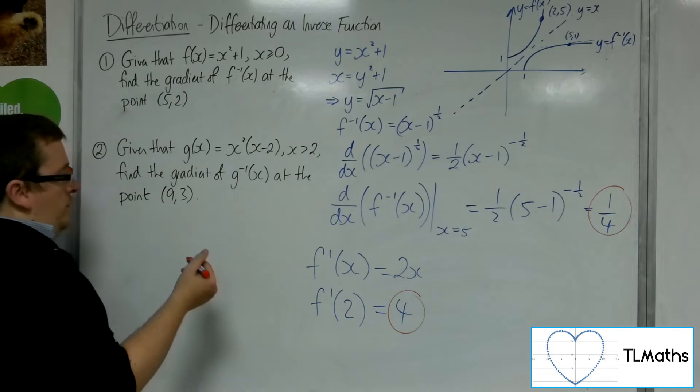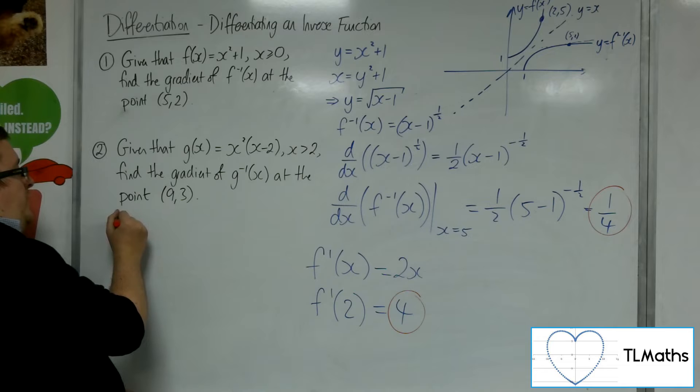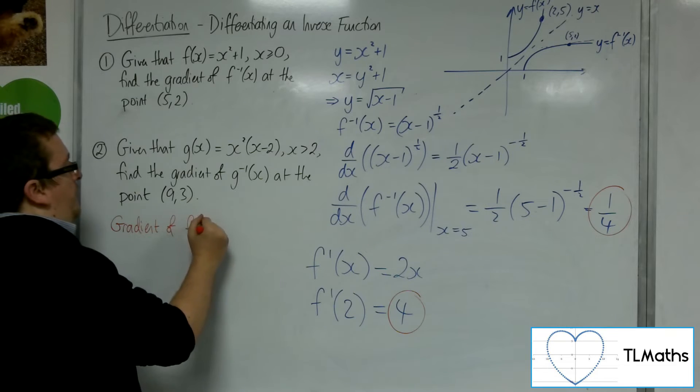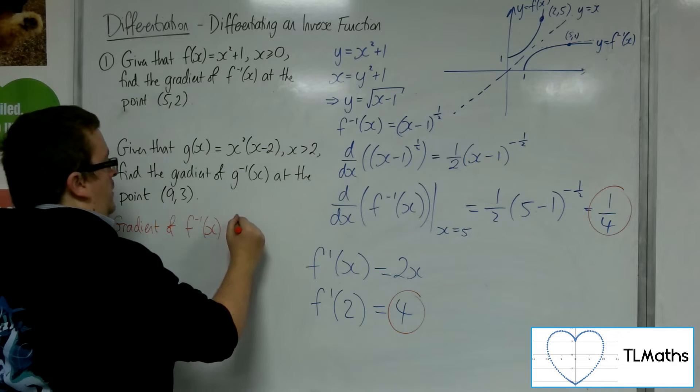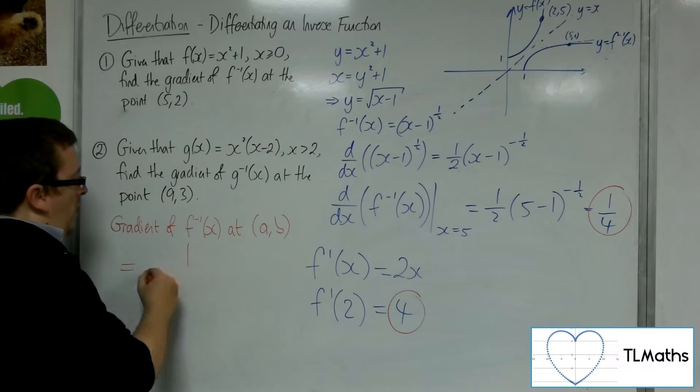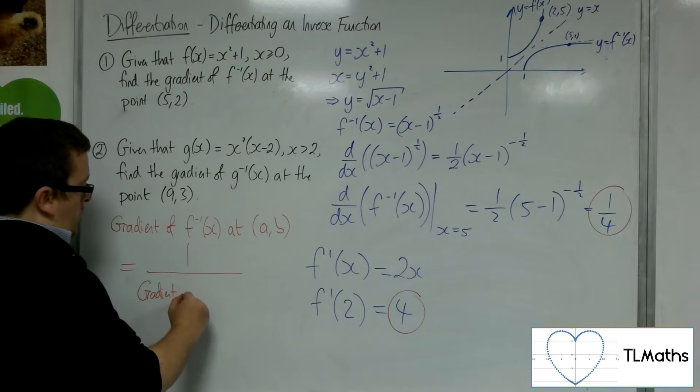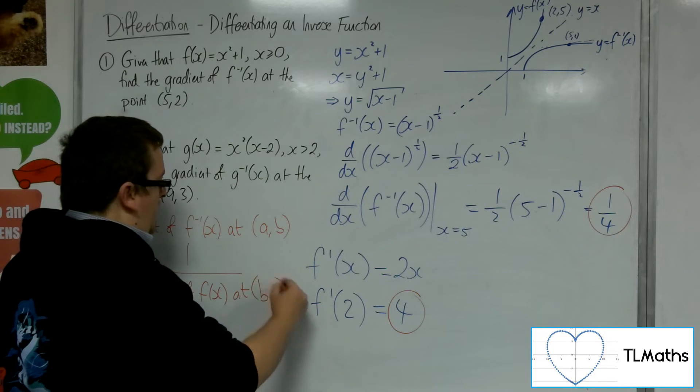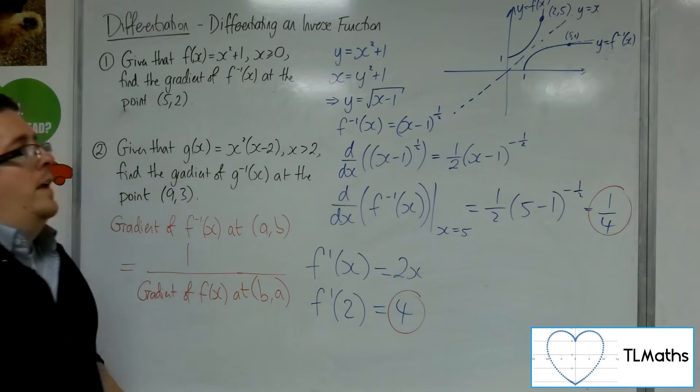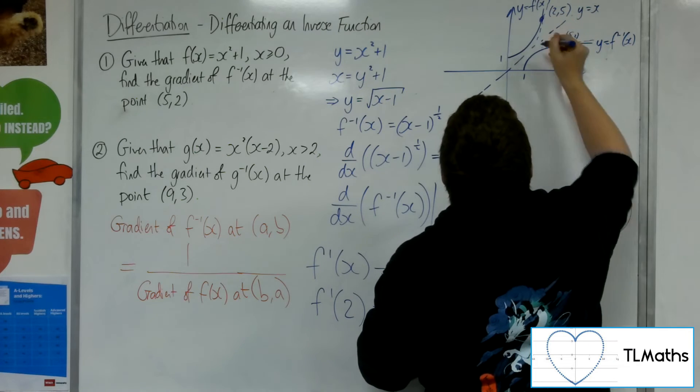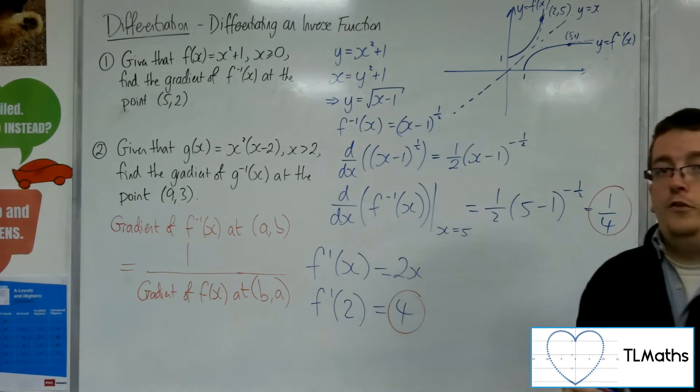it is true that the gradient of the inverse function at a coordinate (a,b) is equal to 1 over the gradient of the original function at (b,a). Okay, so in other words, the gradient of that line there is 1 over that one, and vice versa.